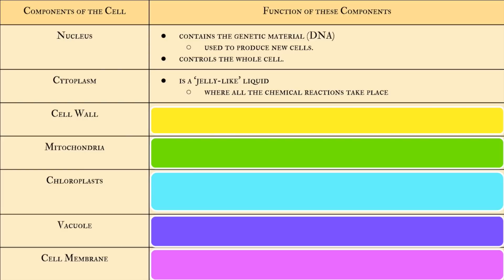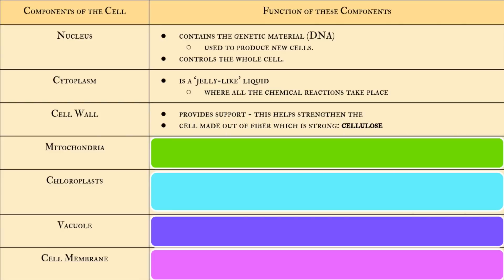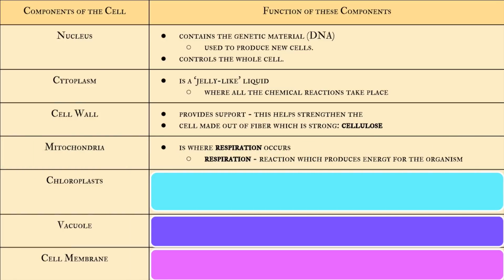Third, the cell wall provides support and helps strengthen the cell. The cell wall is made out of a fiber called cellulose, which is very strong. Next, the mitochondria is where respiration occurs. Respiration is a reaction which produces energy for the organism.